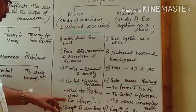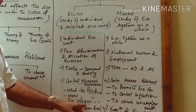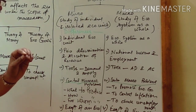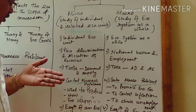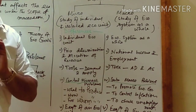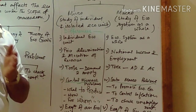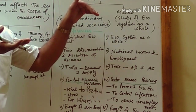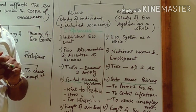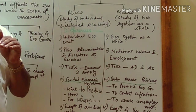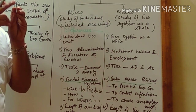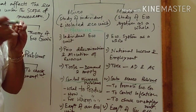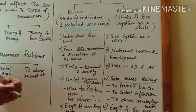For whom to produce is about the allocation of resources — it is actually about distribution: personal distribution and functional distribution. Personal distribution means whether the goods will be produced for the rich class, the poor class, or the middle class. Functional distribution means what percentage of total GDP will go to labor, how much will be the share of land, what percentage will be the share of capital, and how much will go to the entrepreneur.